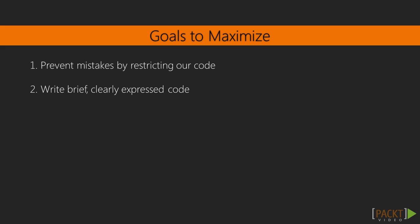When choosing between an implicit or an explicit type, we should try to find a way to maximize the following goals. One: prevent mistakes by restricting the range of possibilities that we can write in our code, thereby protecting the programmer from themselves. Two: write brief and clearly expressed code. Let's take a look at how we can do that.